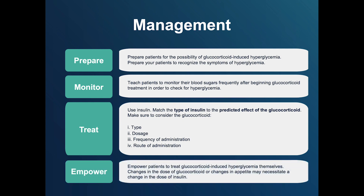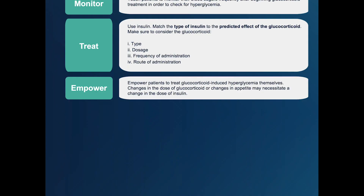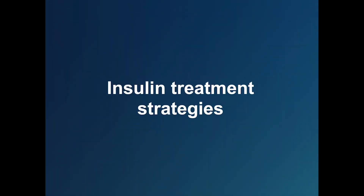The fourth step is to Empower. Empower patients to treat glucocorticoid-induced hyperglycemia themselves. Teach them when and how often to test their blood sugar levels, how to recognize the symptoms of hyperglycemia and hypoglycemia, and how to adjust their insulin. For example, changes in the dose of glucocorticoid or changes in appetite may necessitate a change in the dose of insulin.